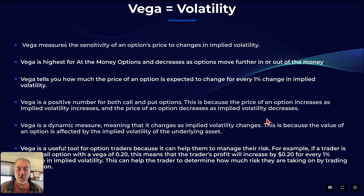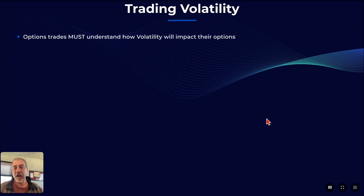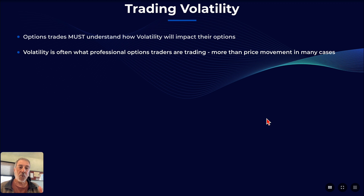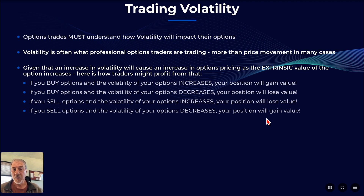Vega is a useful tool for options traders because it can help them manage their risk. For example, if a trader is long a call option with a Vega of 0.20, this means that the trader's profit will increase by 20 cents for every 1% increase in implied volatility. This will help a trader determine how much risk they have on when they look at their position Vega. So when we look at trading volatility, many traders don't realize that options traders specifically have to understand how volatility is going to impact their options price, because you're not only trading the price of the underlying — in many cases, you're also trading volatility. That's what professional option traders are looking for.